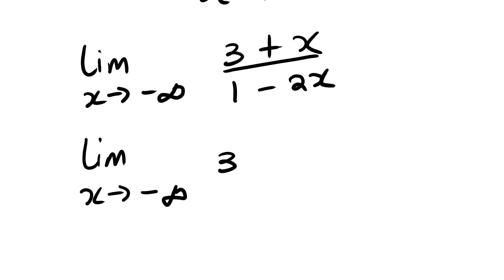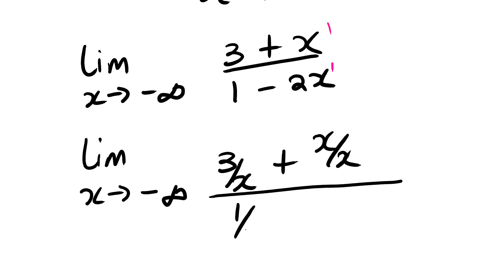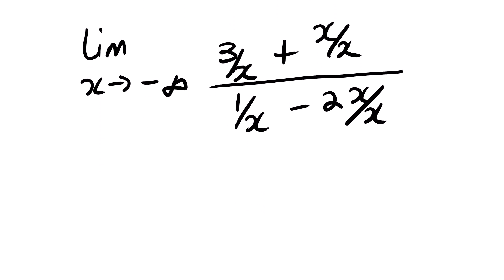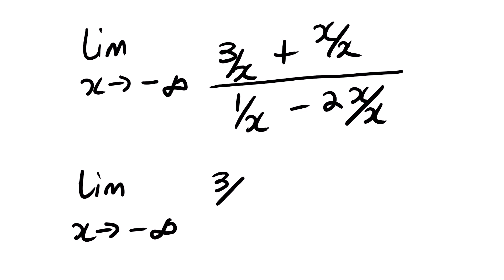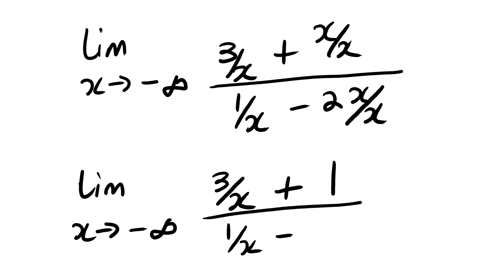In this case, we only have x raised to the power of 1. So we divide every term by x: x divided by x plus x divided by x in the numerator, all over 1 divided by x minus 2x divided by x in the denominator. This simplifies to the limit as x approaches negative infinity of 3 over x plus 1, all over 1 over x minus 2.